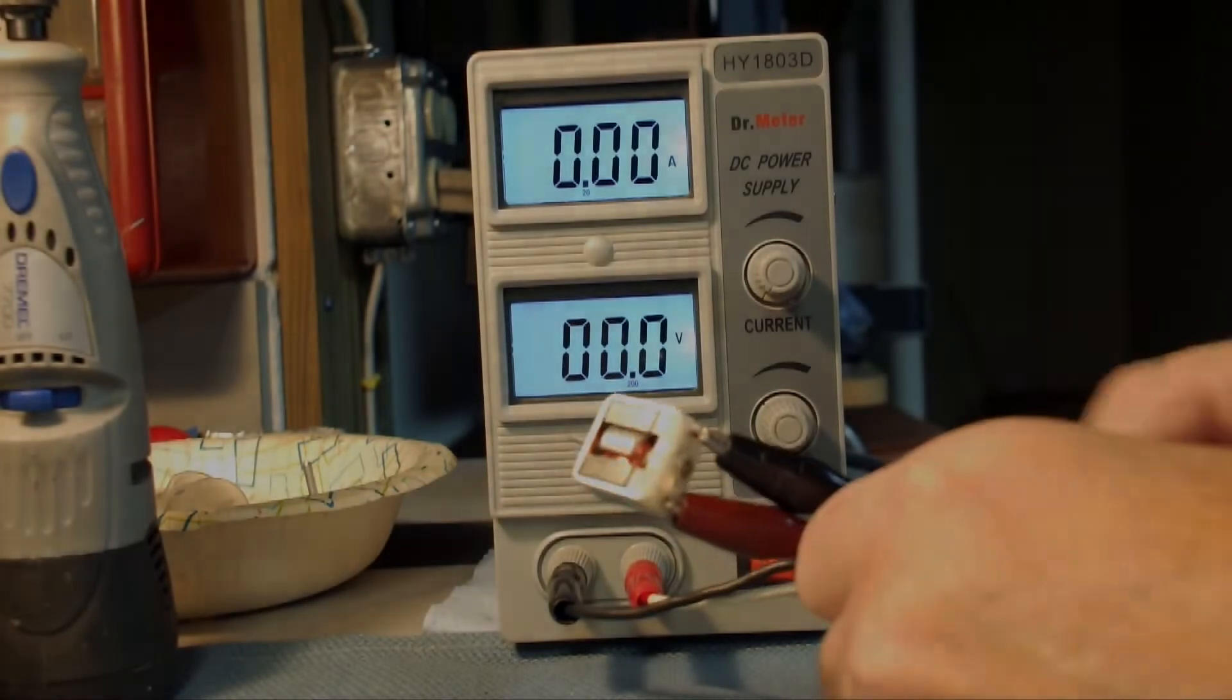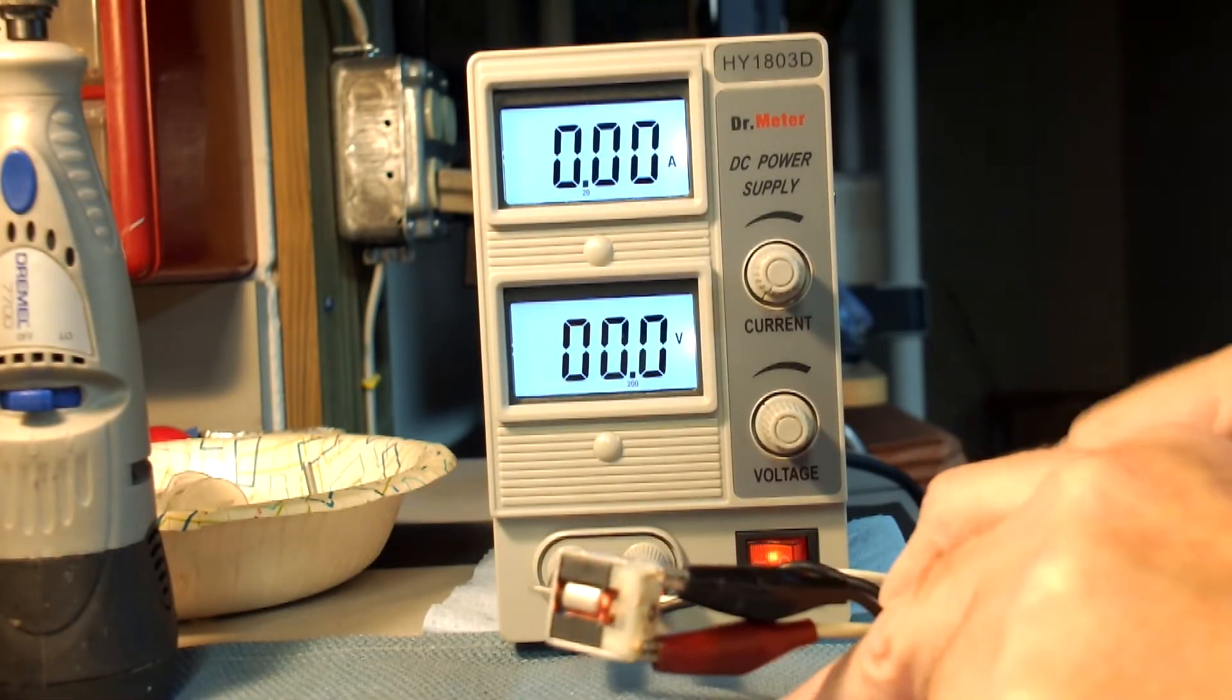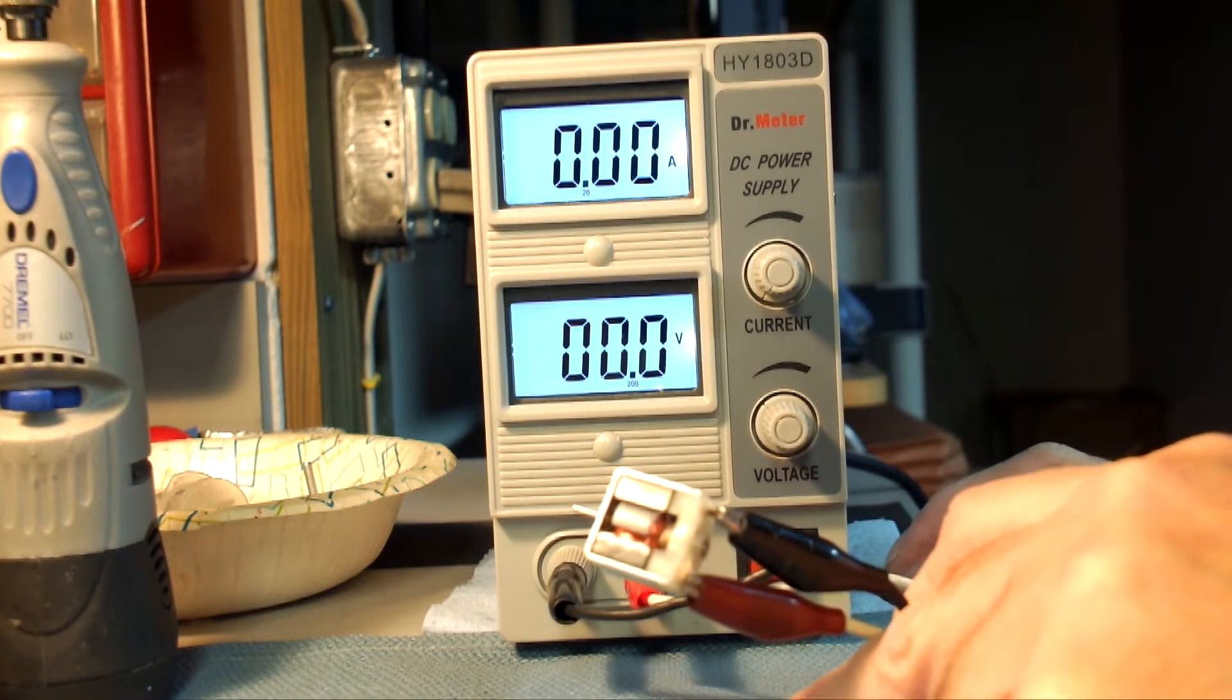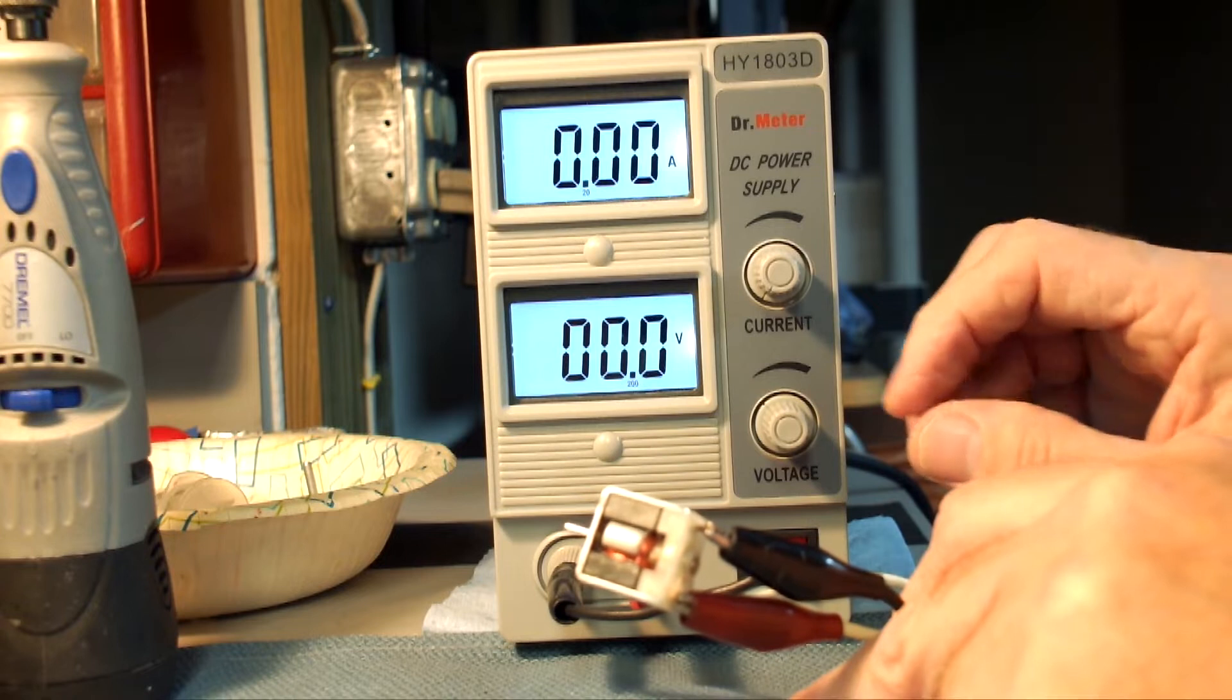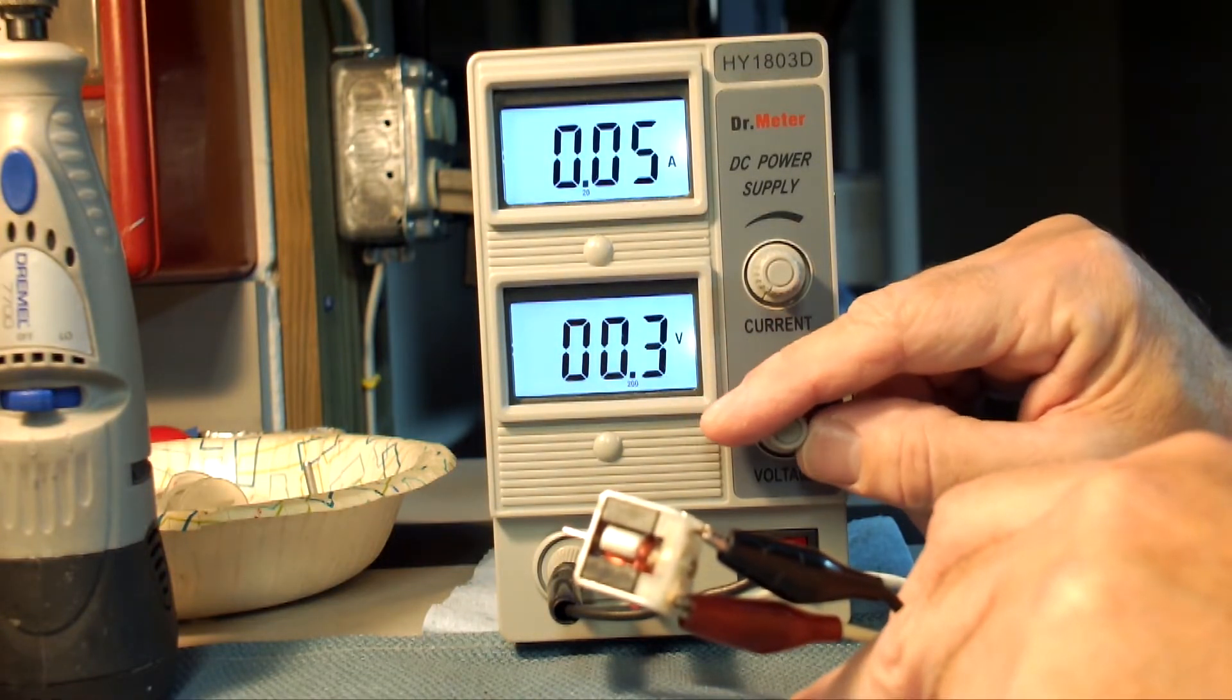Alright, we're going to have a little demonstration here with some armatures in terms of amp draw and voltage. This here is a standard 6 ohm Mabuchi can motor and we're going to watch the amp draw as the voltage is cranked up.